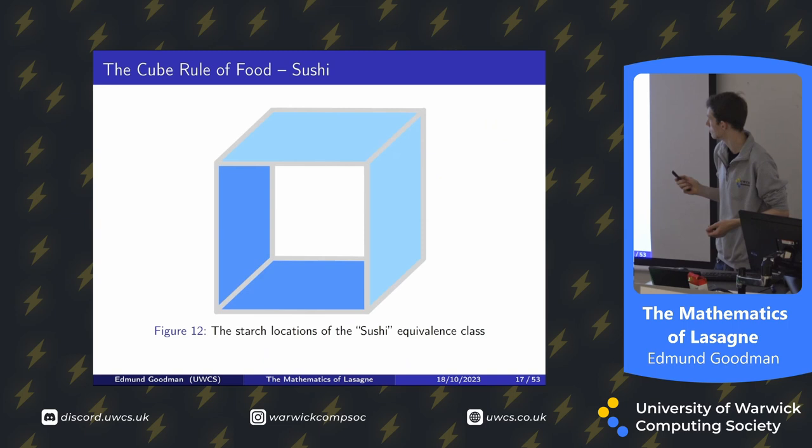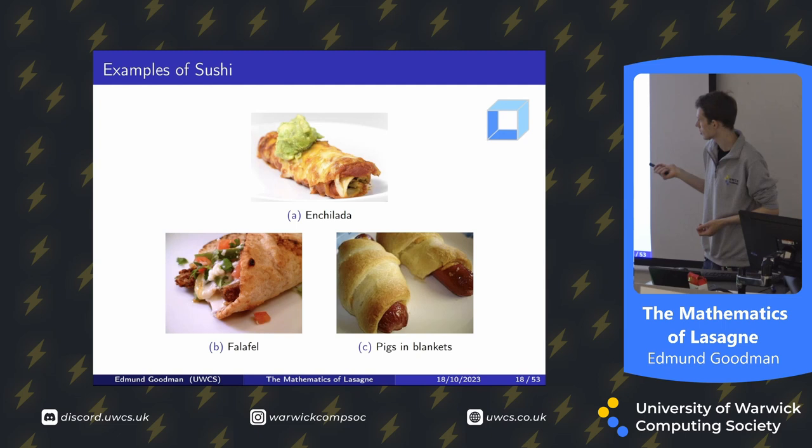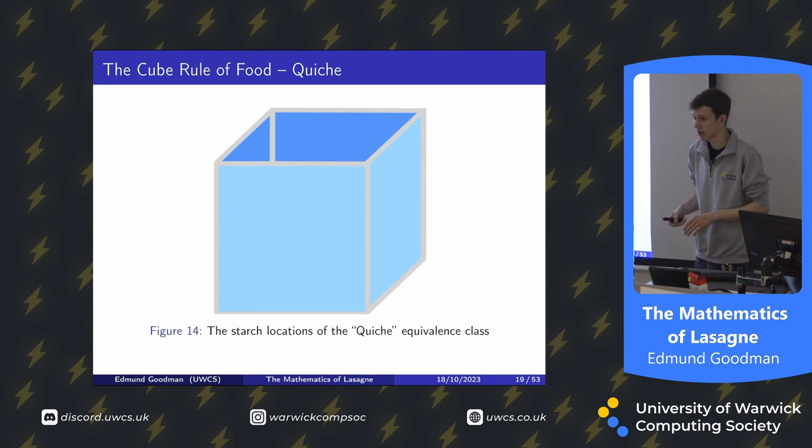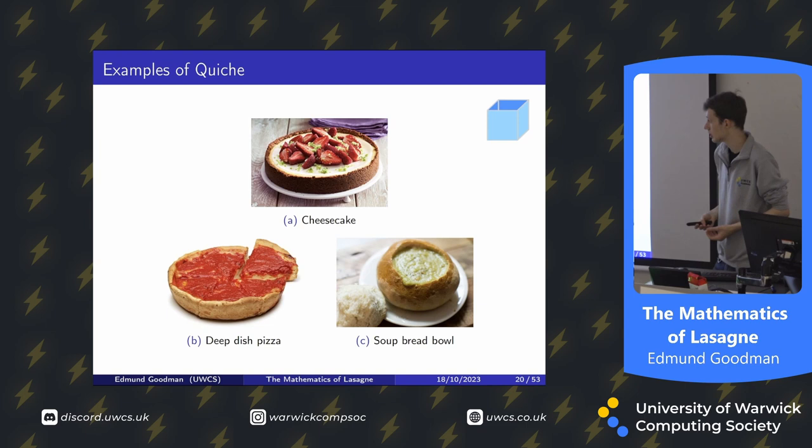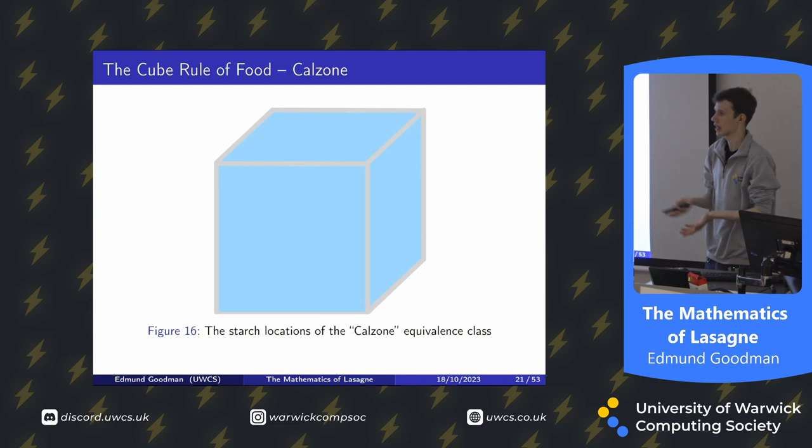Moving quicker now: sushi covers all four sides like a roll, so enchiladas, falafels and pigs in blankets are examples of sushi. Quiche is everything except the top being starch — so a cheesecake and deep dish pizza are in fact quiche, which might upset some Chicago people, and a soup bread bowl is also quiche. Finally, calzone is starch everywhere around, so examples include a whole pie rather than a slice, a burrito, or dumplings.